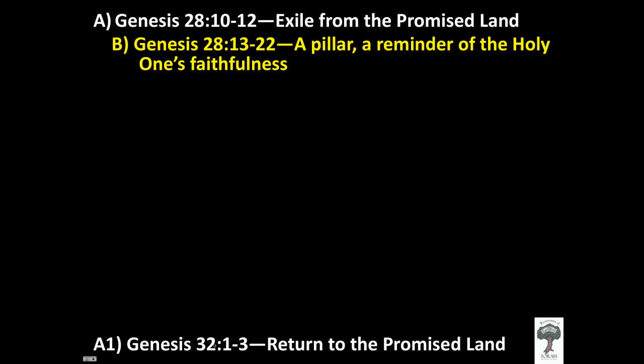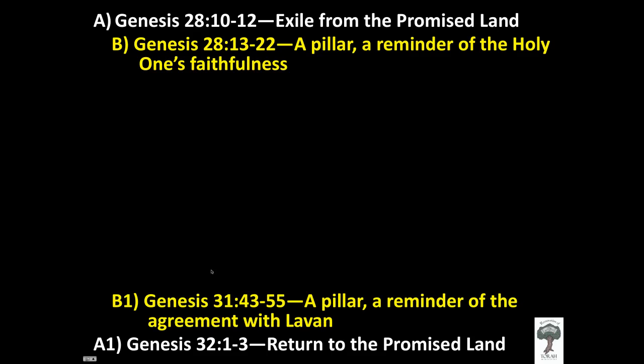The next thematic connection is Genesis chapter 28, verses 13 through 22, which talks about a pillar — a reminder of the Holy One's faithfulness. When Jacob left, he made a covenant of agreement with Adonai and erected a pillar as a reminder, saying if you take care of me and bring me back, I'll build a house of God. This is thematically connected to Genesis 31, verses 43 through 55, where Jacob and Laban erected a pillar as a reminder of their agreement not to be aggressive toward one another. That is the second major theme of this passage.